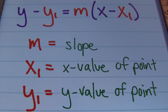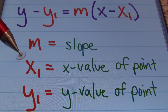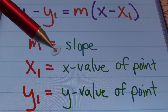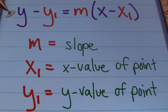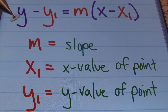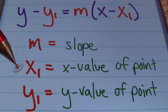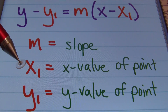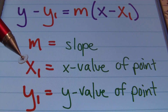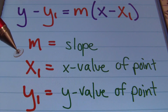The slope determines how your line will rise on your graph. The x1 value is simply the x value of the point that's given, or the first point if given more than one point. The y1 value is the y value of the point that's given, or the y value of the first point.